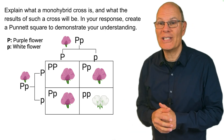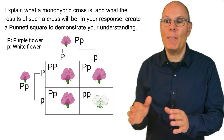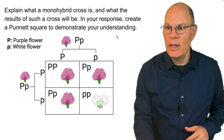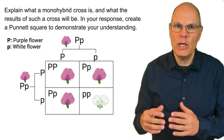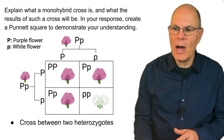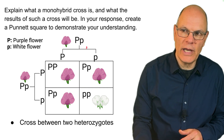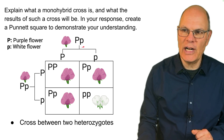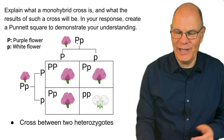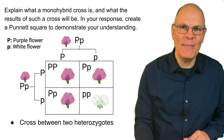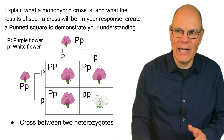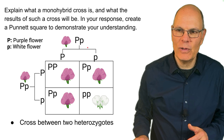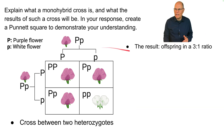Explain what a monohybrid cross is and what the results will be — create a Punnett square to demonstrate your understanding. A Punnett square uses the rules of probability to quickly predict the offspring of genetic crosses. A monohybrid cross is a cross between two heterozygotes. These are peas, one of Mendel's study organisms. This pea has purple flowers with genotype capital P, lowercase p — it's a heterozygote, hybrid for one characteristic. The result will be offspring in a three-to-one ratio.